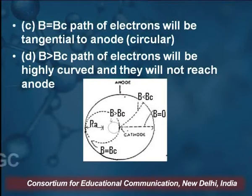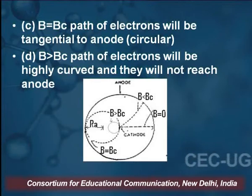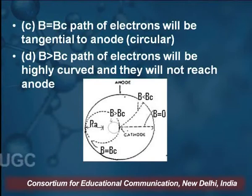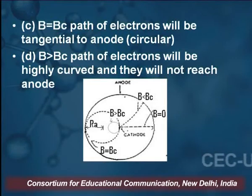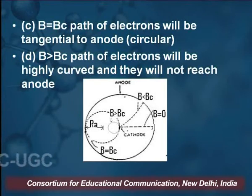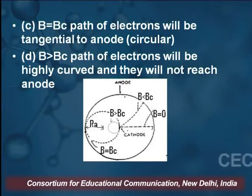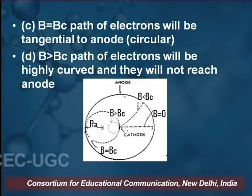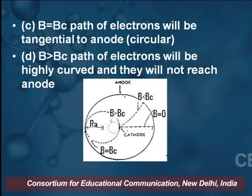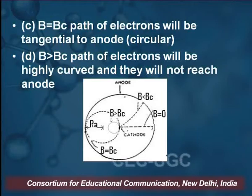If B is equal to Bc, the applied field equals the critical field, then the path of the electrons will be tangential to the anode and will form circular motion. At B equal to 0 the path is a straight line from cathode towards the anode. The anode is the outside ring and cathode is the inside ring. At B equal to Bc the trajectory is radial and tangential to the anode in circular form.